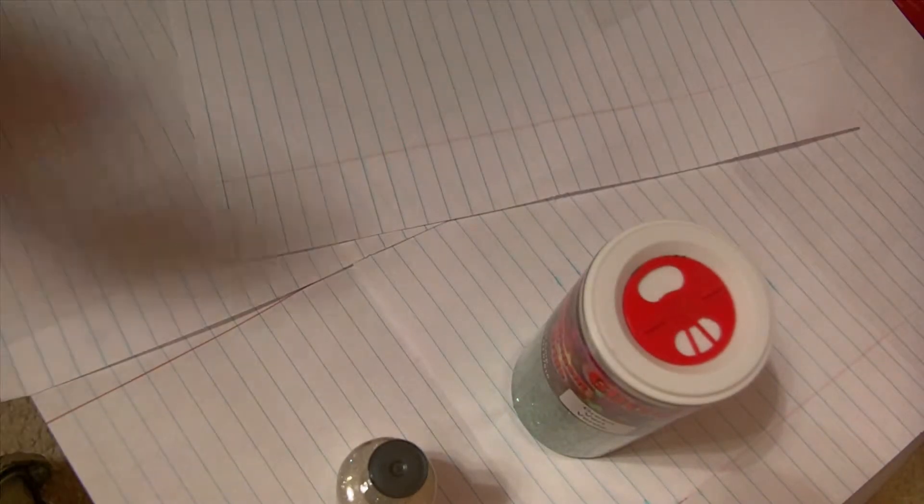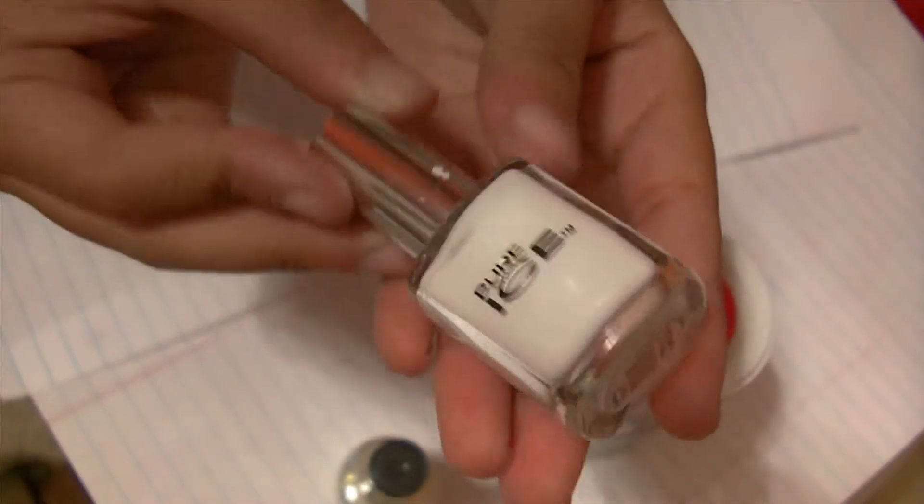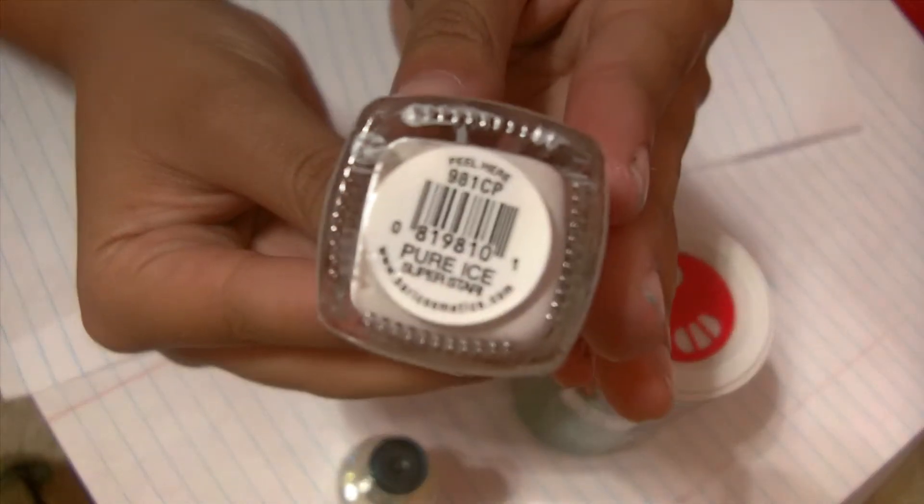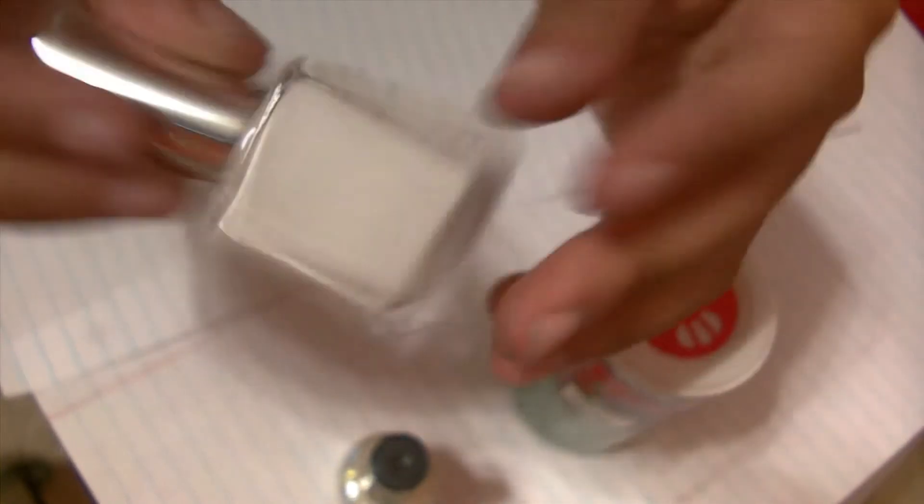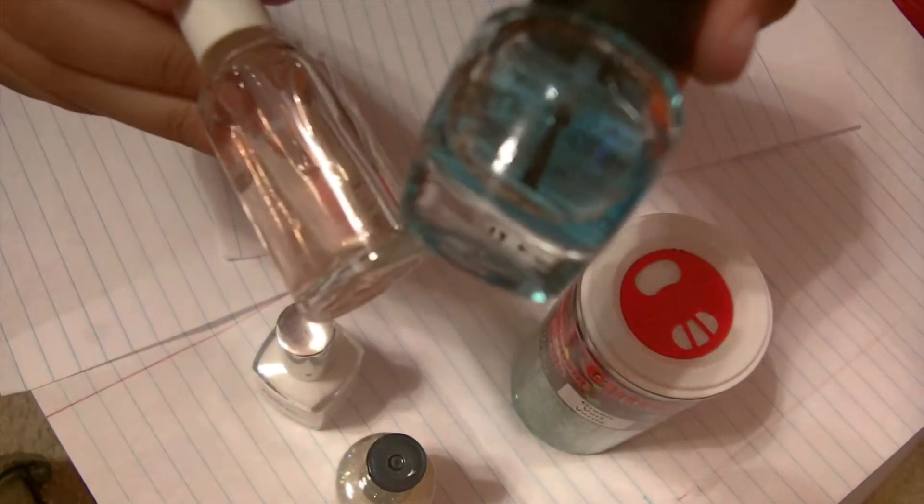But we're going to be using a white nail polish. You don't necessarily have to use white. This is by Pure Ice in the color Superstar. A base coat, you know, I just have this one by LA Colors, and then this one by Sally Hansen.